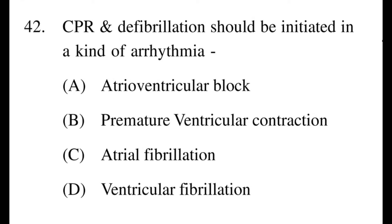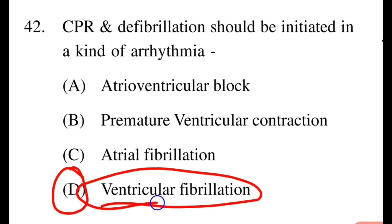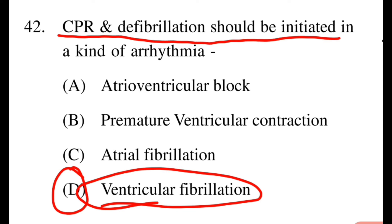Next question: CPR and defibrillation should be initiated in which kind of arrhythmia? Options: A: AV block, B: premature ventricular contraction, C: atrial fibrillation, D: ventricular fibrillation. The right option is D — if the patient has ventricular fibrillation, CPR and defibrillation should be started immediately.